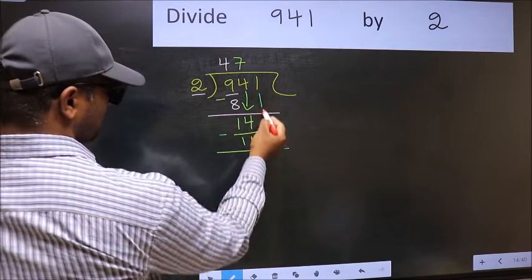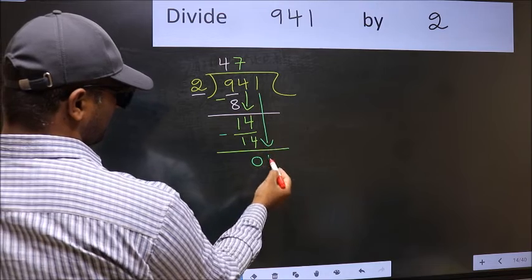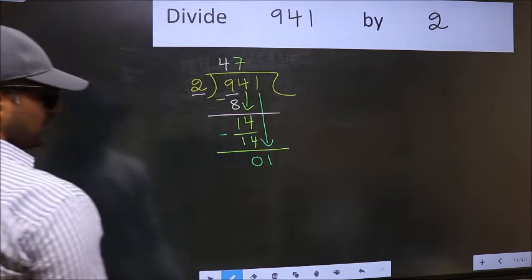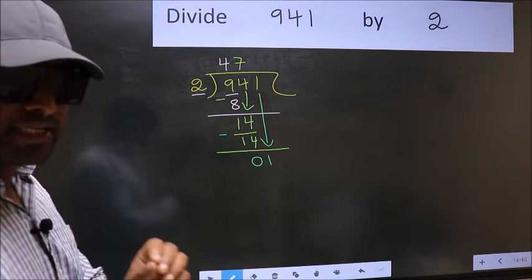After this, you should bring down the beside number. So 1 down. After this step, the mistake happens. And the mistake is this.